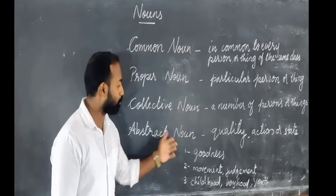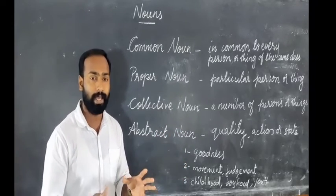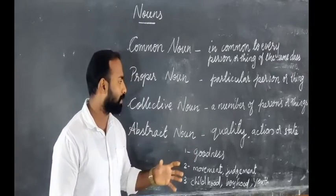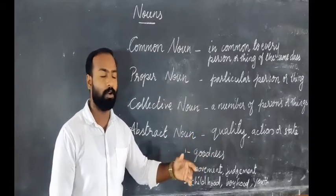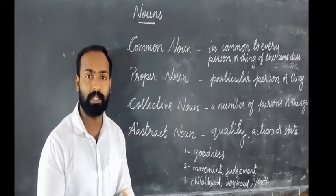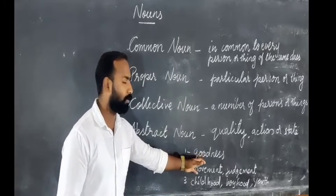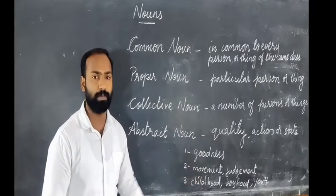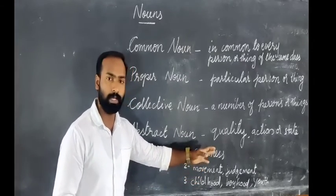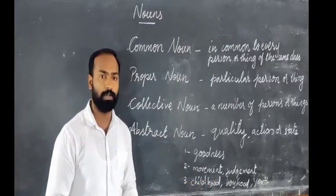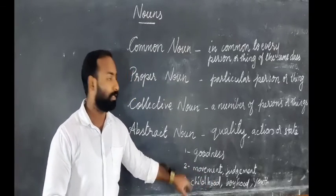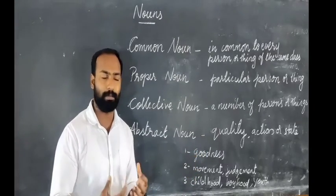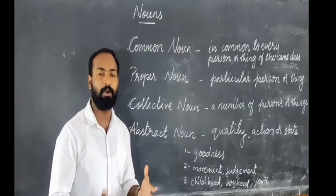We are moving to the last one: Abstract Noun. An Abstract Noun is a noun that cannot be seen — it refers to a quality, action, or state apart from the thing it belongs to. For example, 'goodness' is a quality. 'Movement' or 'judgment' are examples of action. 'Childhood' or 'boyhood' are examples of state. So goodness and kindness are examples of quality, movement and judgment are examples of action, and childhood is an example of state.